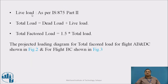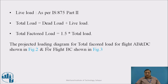The live load is assumed as per IS 875 Part 2, depending on whether it is a residential building, public building, or other occupancy type. Total load equals dead load plus live load. Factored load is 1.5 times the total load. The projected load distribution diagram for the total factored load for flight AB and DC is shown in Figure 2, and for BC in Figure 3.